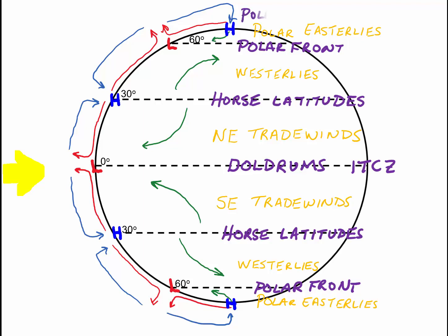Now finally, at the poles, we have the polar high. This is the area where there is sinking air. And again, we will see a polar high at 90 degrees north and at the south pole at 90 degrees south.